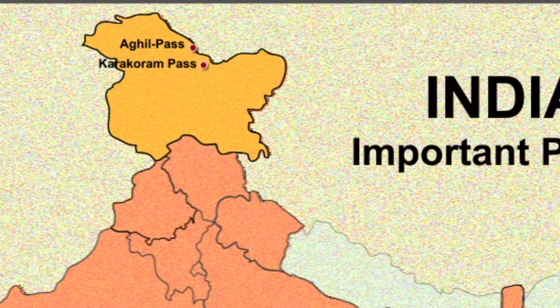Next one is the Banihal Pass. It is a pass across the Pir Panjal range. This mountain range separates the Kashmir valley from the outer Himalaya and the plains to the south.